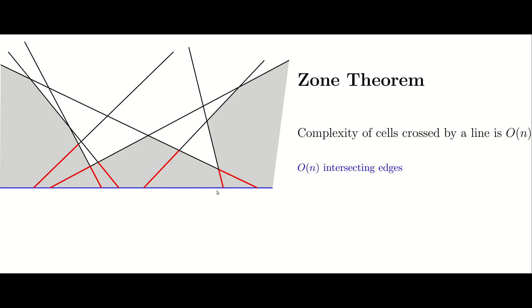The edges that intersect the blue line are created by the lines that intersect the blue line. Since there are n lines, we have at most n red edges. So the edges that can intersect the blue line are bounded by n.